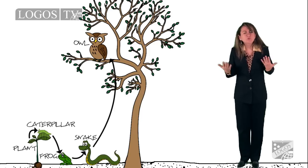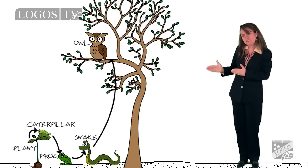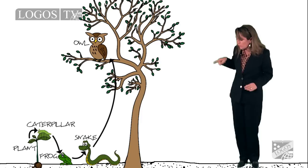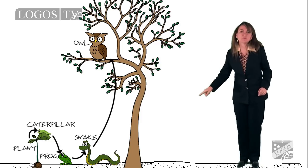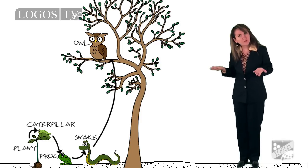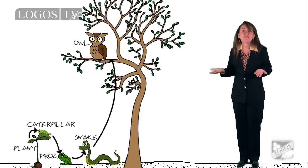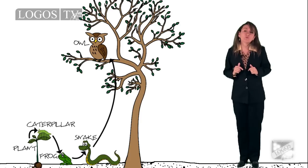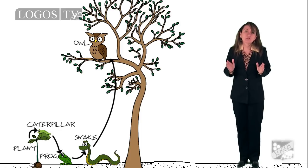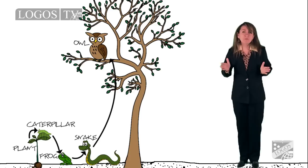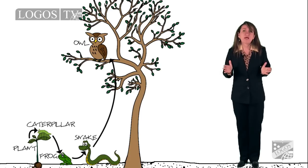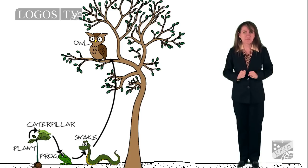Now what would happen to this food chain if one of these animals or living things disappear? Well, that is why we consider abiotic factors important — because abiotic factors determine life in ecosystems.